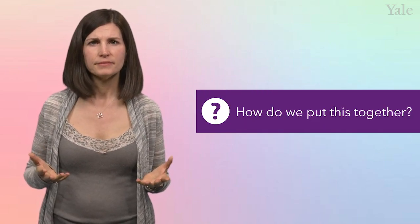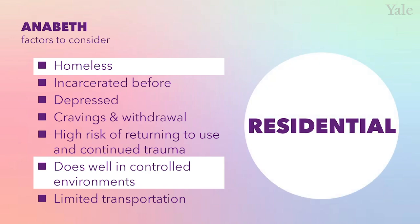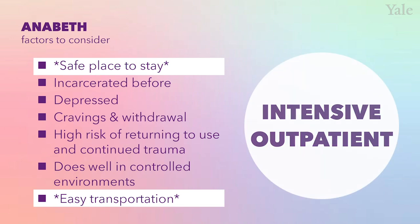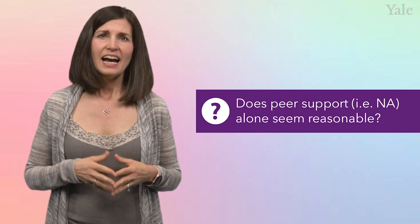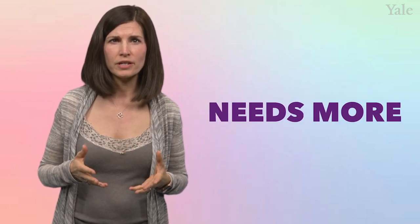So how do we put all of this together? Given previous success in a controlled environment and the fact that she is currently homeless, that might justify an initial residential stay in order to initiate abstinence. However, were things slightly different and Annabeth had a safe place to stay and easy transportation to the treatment facility, a trial at intensive outpatient treatment first before jumping to residential might also seem reasonable. Let's keep looking at other treatment settings and see what we think. Does peer support or going to Narcotics Anonymous alone seem reasonable?